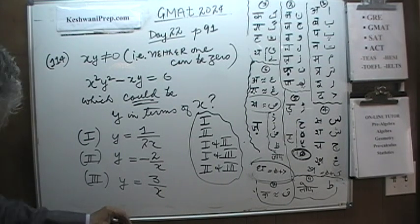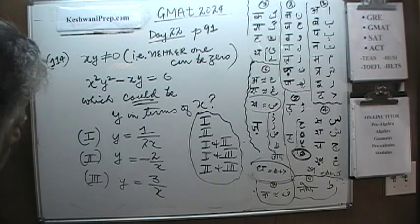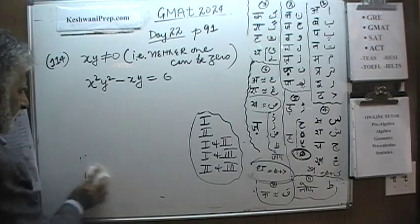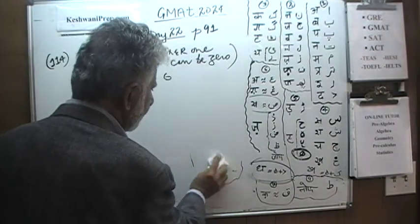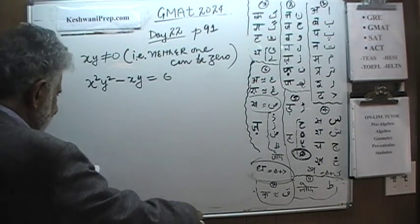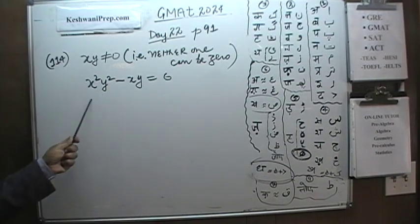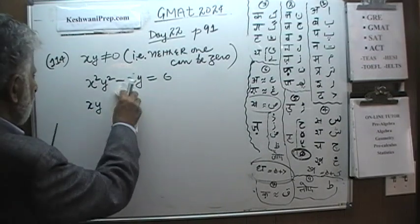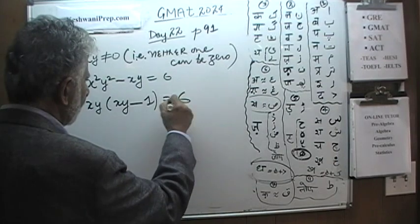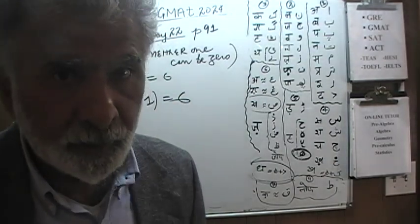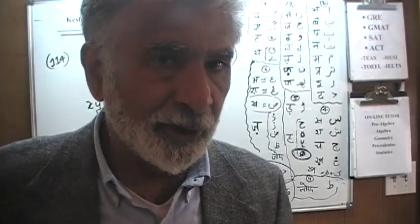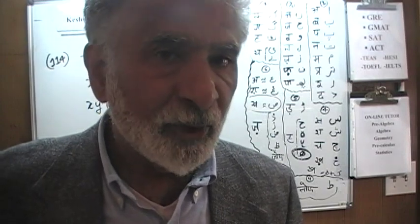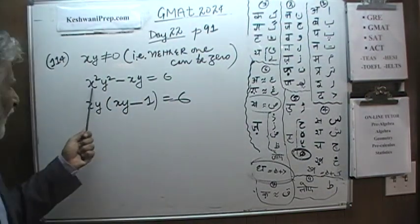Let's see what we can do. We need the room, so I am going to erase these three statements. Here we have x squared y squared and here we have xy. Let's take out the xy common. If we take out xy common, in the first term we are left with xy, and in the second term we have 1, equal to 6. There are two ways to solve this: one is the classical algebraic way, the other is the quick and dirty way — which is what I am showing you right now.